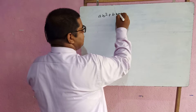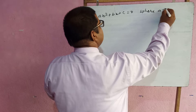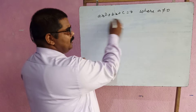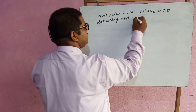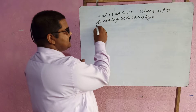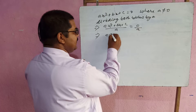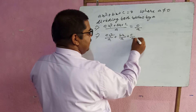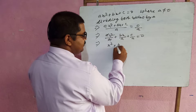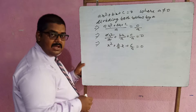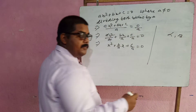The general form of a quadratic equation is Ax² + Bx + C = 0, where A does not equal zero. If you divide both sides by A, you get x² + (B/A)x + (C/A) = 0. Alpha and beta are the two zeros of this quadratic equation.